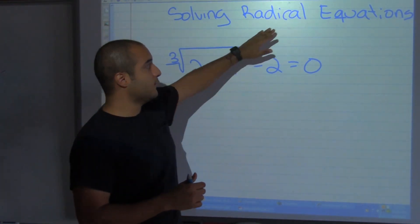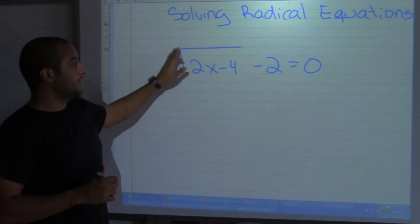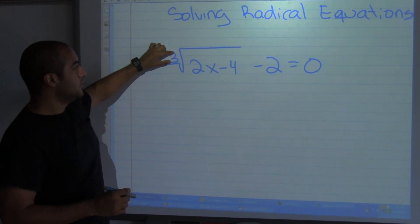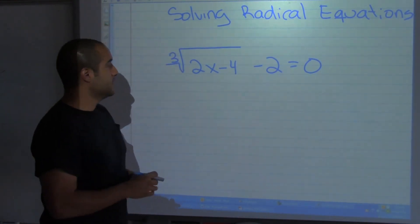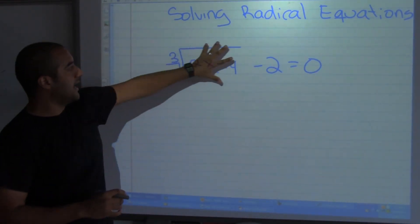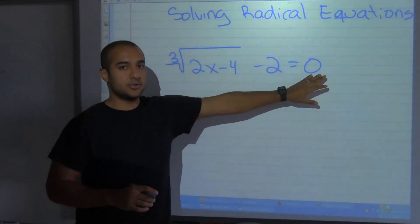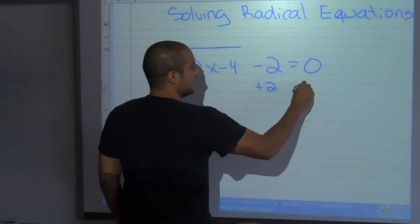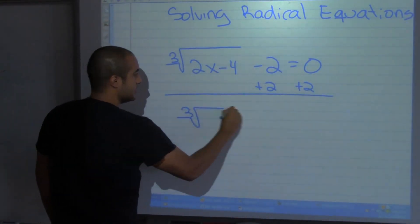Hey guys, welcome back. Today we're going to look at radical equations. You can tell it's a radical equation if it has a radical. In this case, notice that we have the cube root of this term — so it's not just a regular square root, this is the cube root. What I want to do here is isolate what's in my cube root, so I need to get rid of my minus 2 and send it over to the other side. Add 2 to both sides.